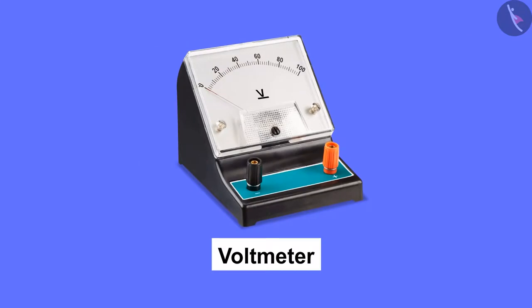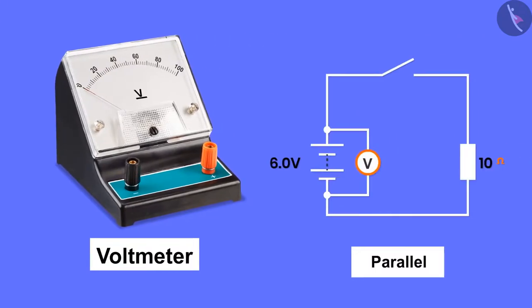The potential difference is measured with the help of a device called a voltmeter. The voltmeter is always placed in parallel order.